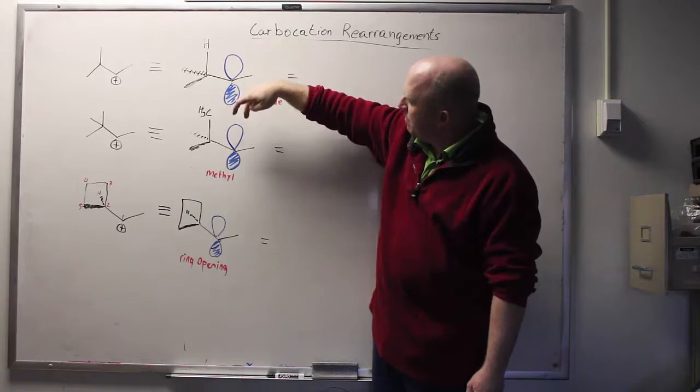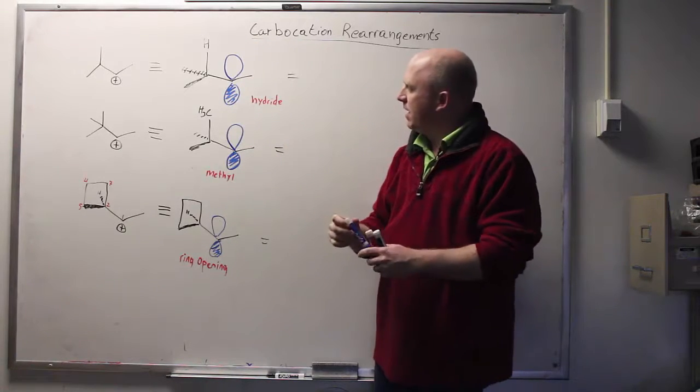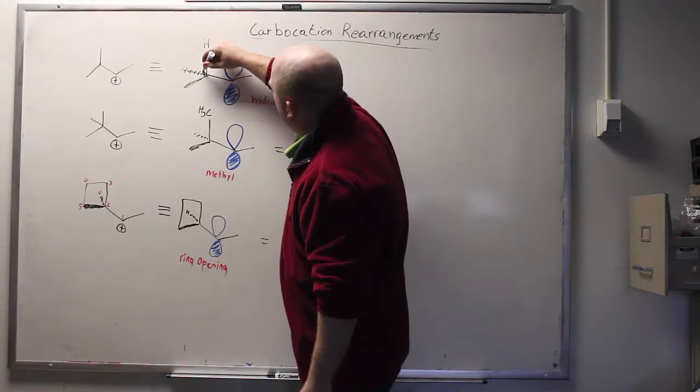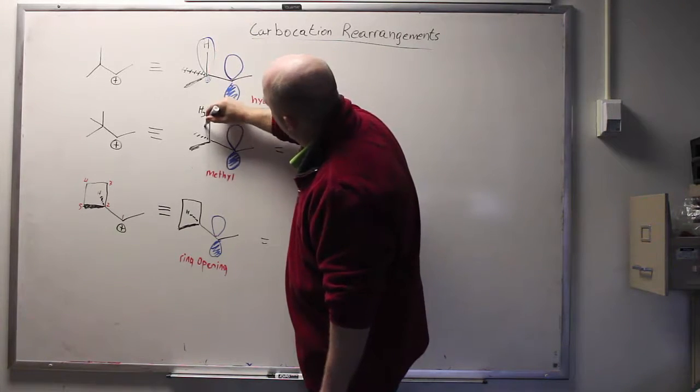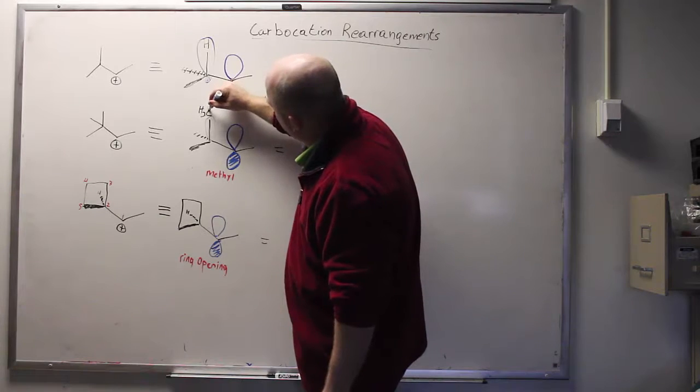In all cases, what you have is an empty P orbital that's being stabilized by a nearby group. In this particular case, it is a carbon-hydrogen sigma bond. In this case, what we have is a carbon-carbon sigma bond.